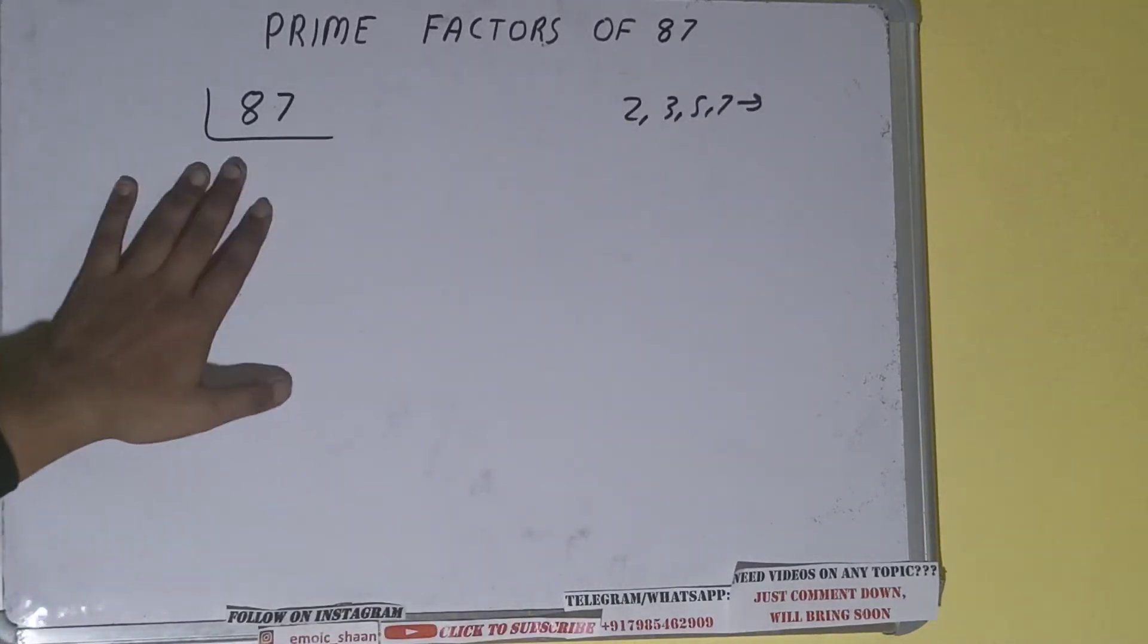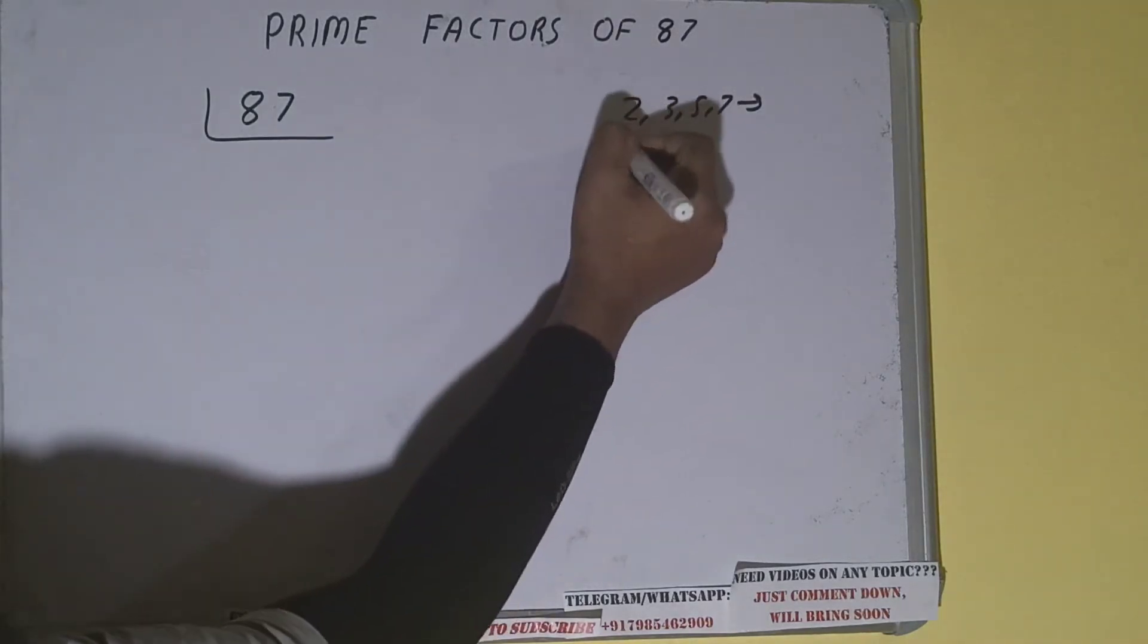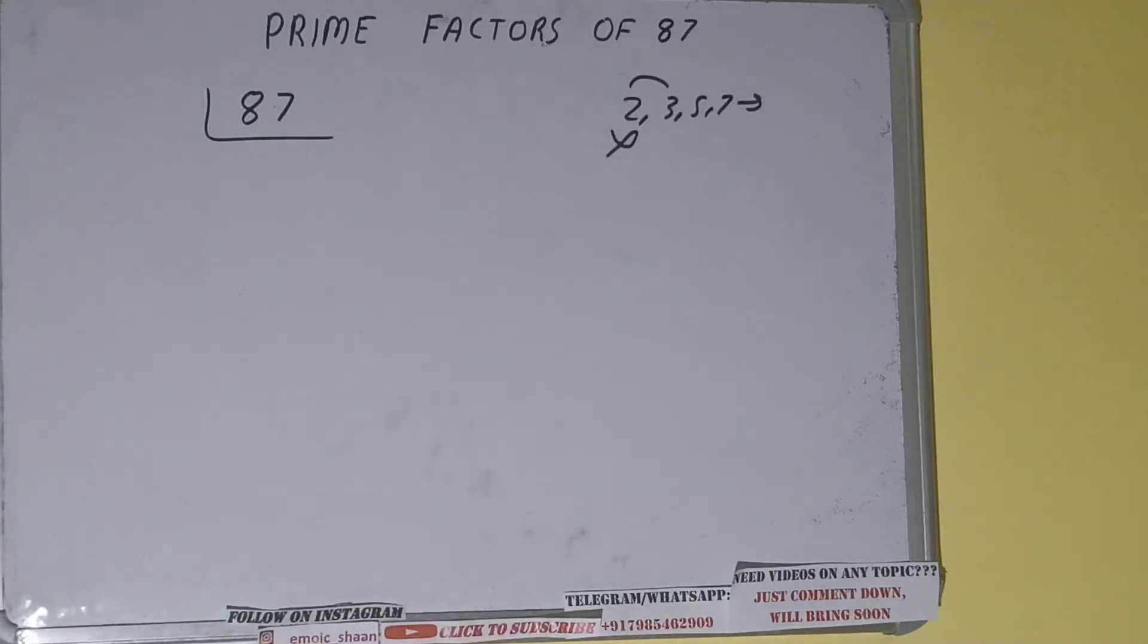That is two. Is the number 87 divisible by two? Clearly not, because the number is odd. So we'll be going to the next lowest prime number, that is three. Is the number 87 divisible by three? If we check...